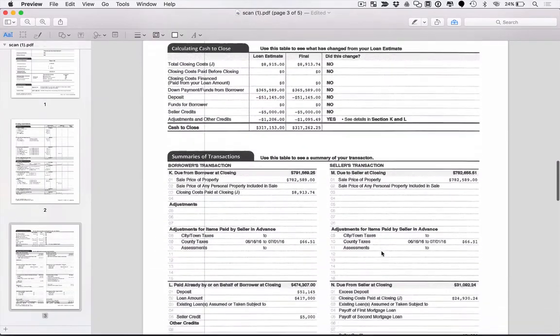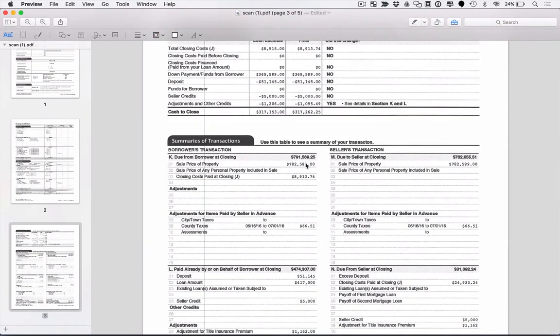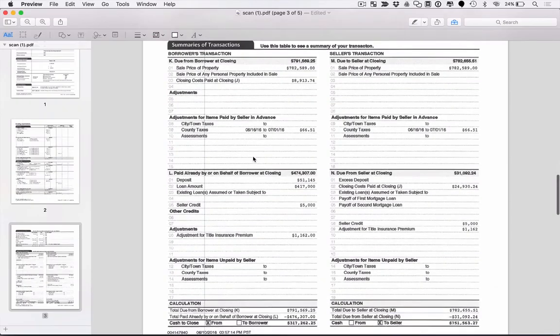Moving on in this closing disclosure, there's what we call like a settlement statement, which is the accounting of the transaction. And this is where we as realtors will help you ensure that the terms of the contract are upheld in the accounting of the agreement. So if the seller is going to be paying for an owner's policy of title insurance, this is where we make sure that the buyer is properly credited and the seller is properly debited that amount such that your cash to close accurately reflects the full agreement.